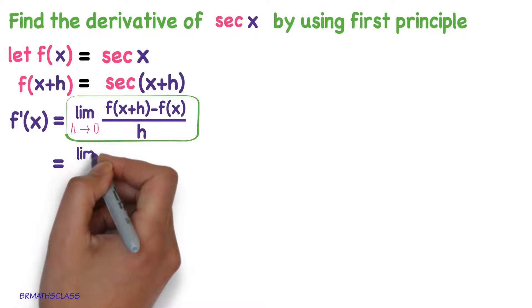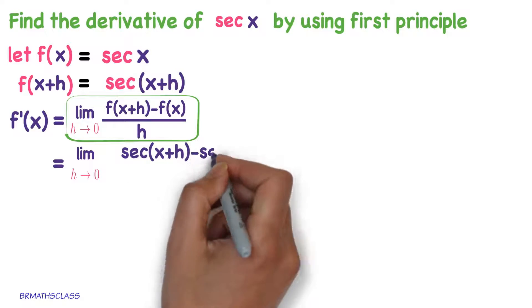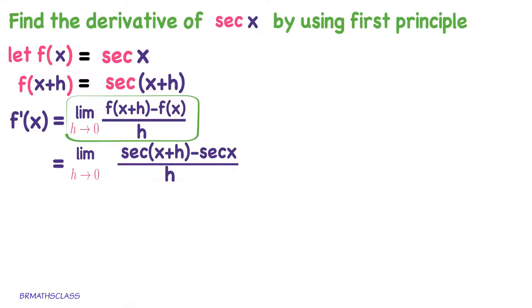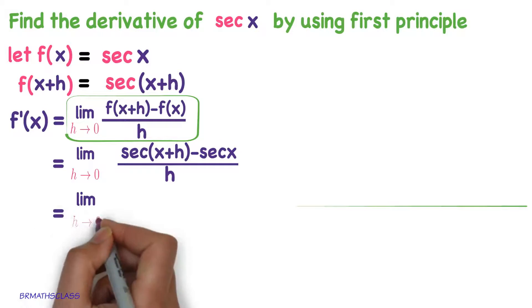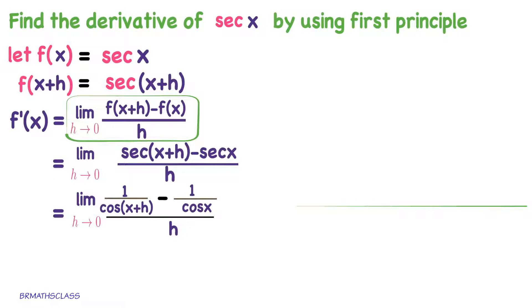Now substitute: f of x plus h is secant of x plus h, minus f of x is secant x, whole divided by h. We know the trigonometry formula secant x is 1 by cos x. So limit h tends to 0, secant of x plus h can be written as 1 divided by cos of x plus h, minus 1 divided by cos x, whole divided by h.